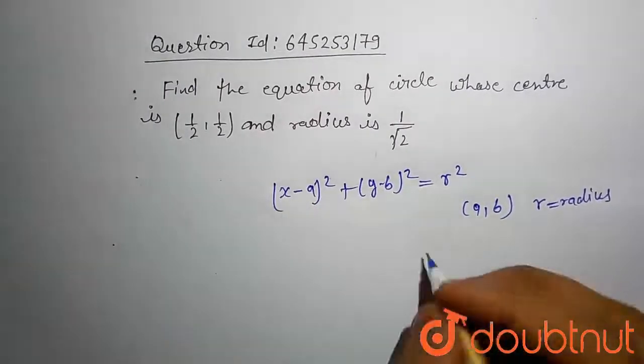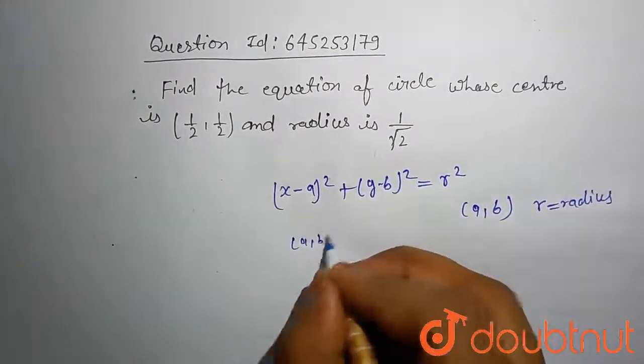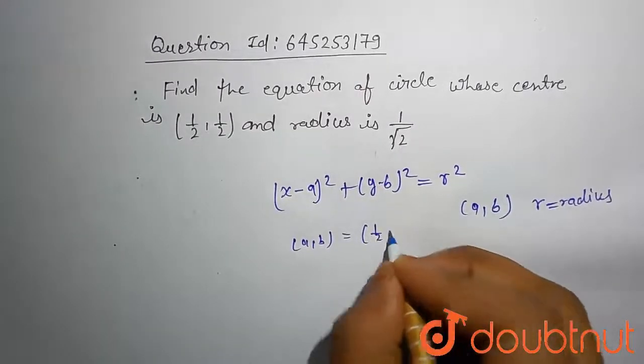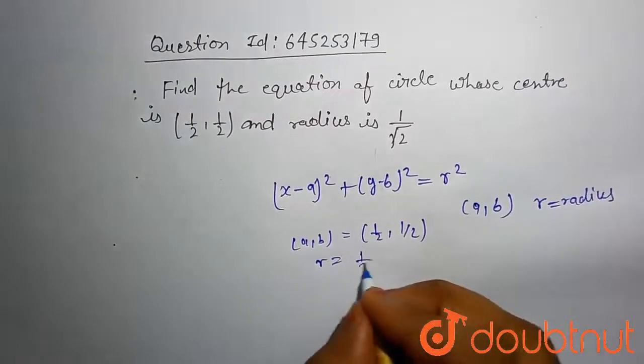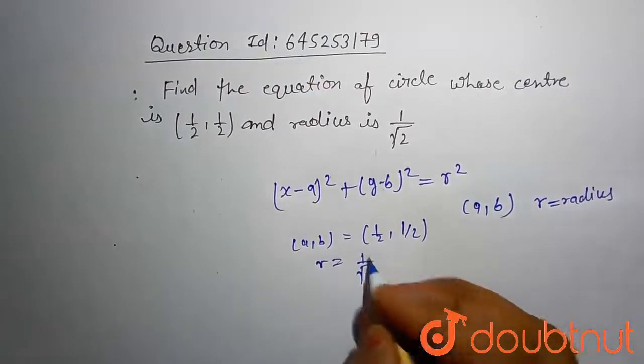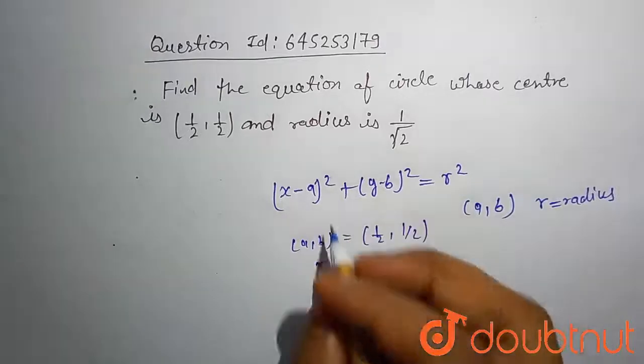In our case, a comma b equal to 1 by 2 comma 1 by 2 and r is equal to 1 by root 2. Just put this value here and compute this.